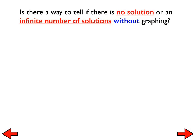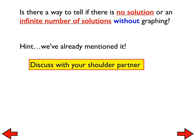Is there a way to tell if there is no solution or an infinite number of solutions without graphing? Yes. No solution means the equations have the same slope but different y-intercepts. Infinite solutions means the equations have the same slope and the same y-intercept — in other words, they are equivalent expressions.